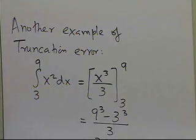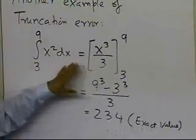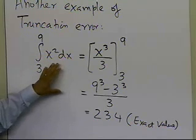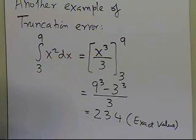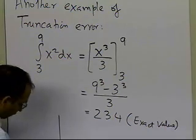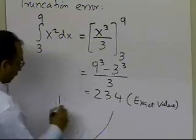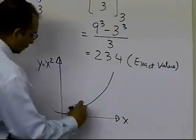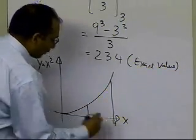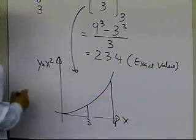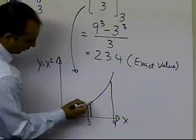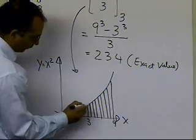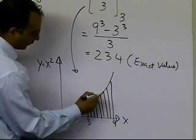If you remember your integral calculus, this particular integral means that you have basically drawn an infinite amount of rectangles or trapezoids to get the area of the curve. So for x squared going from 3 to 9, you have drawn an infinite number of trapezoids, and the area under the curve from those infinite trapezoids gives you a value of 234.